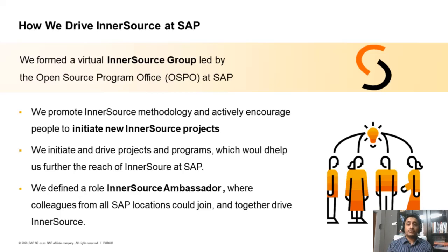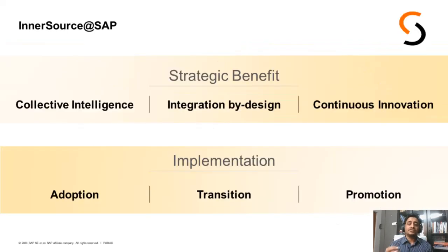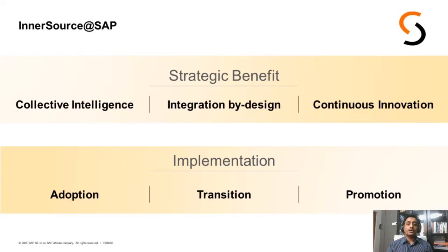We've been experimenting a lot with the InnerSource topic and have come to realize a few key strategic benefits for SAP. The obvious one is collaboration — harnessing the community's collective knowledge and skills to create even better products. SAP's product spans across the entire enterprise business management space, and with reuse and open code via InnerSource, we feel we can achieve integration by design. We're also constantly trying to improve our development processes and reduce time to market, and with InnerSource practices we believe we can augment the delivery of continuous innovation to our customers.